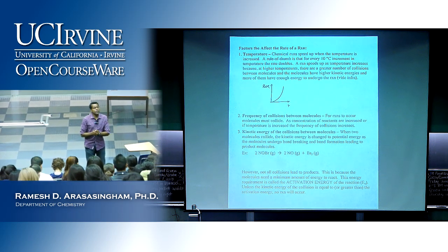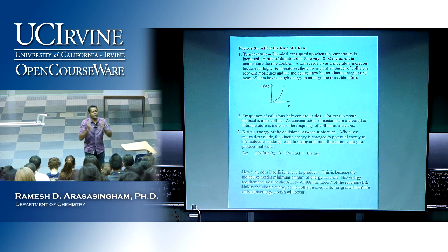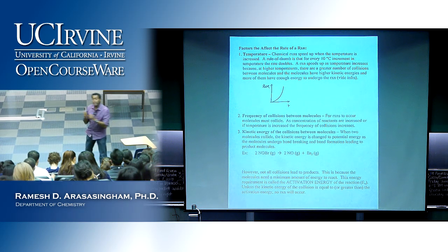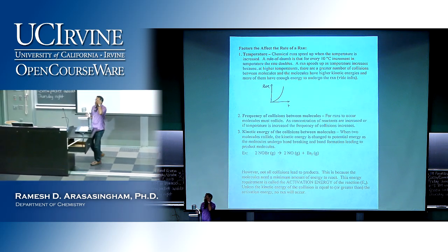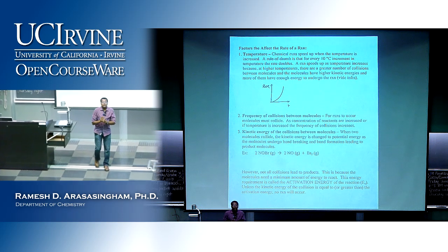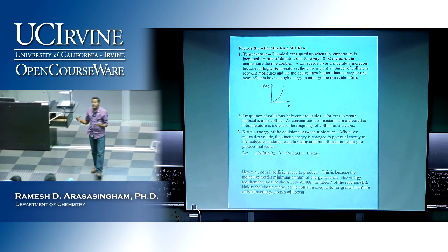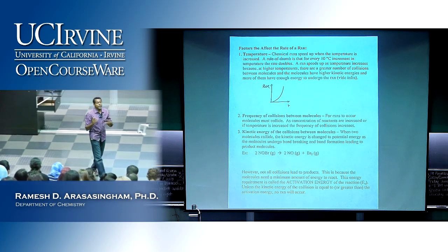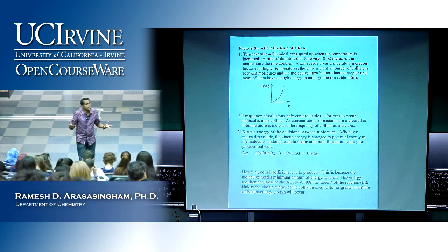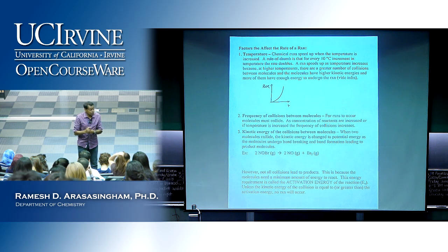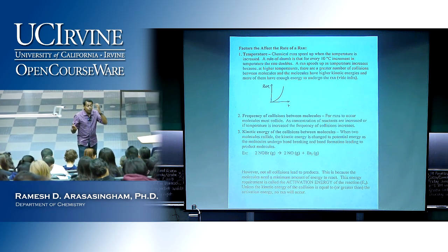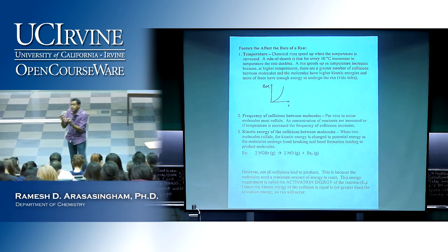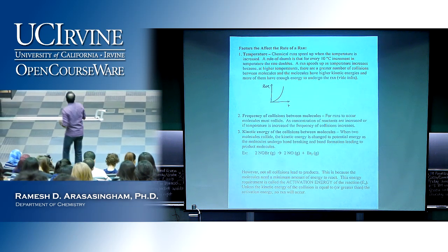When you have molecules colliding, they also have to have just the right amount of energy — the minimum amount. The reason is that when they collide, chemical bonds must be broken and then new bonds are being formed. To break a bond, does it cost energy or release energy? Breaking bonds always costs energy. Bond formation — when a new bond is formed — energy is released. So you need a minimum amount of kinetic energy to break those bonds.